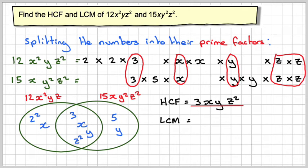And the LCM you get by taking the HCF, which is 3xyz², timesing it by 2² and x, and then timesing it by 5y. So working that out in the right order, 3 times 2² times 5 makes 60.